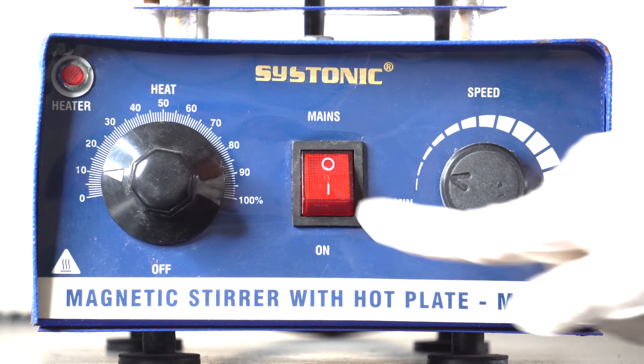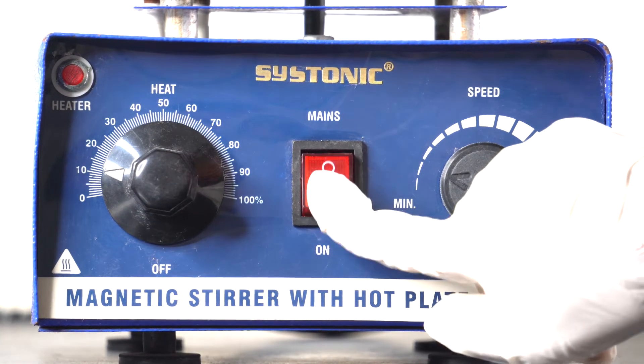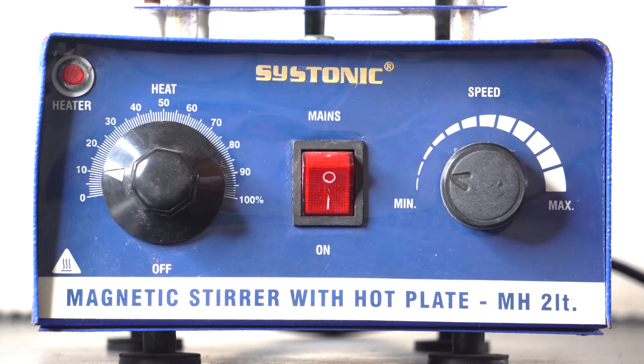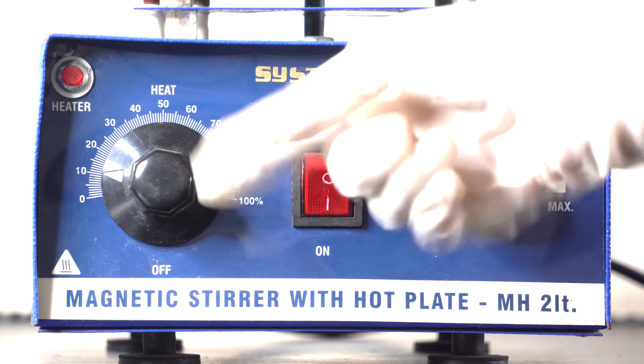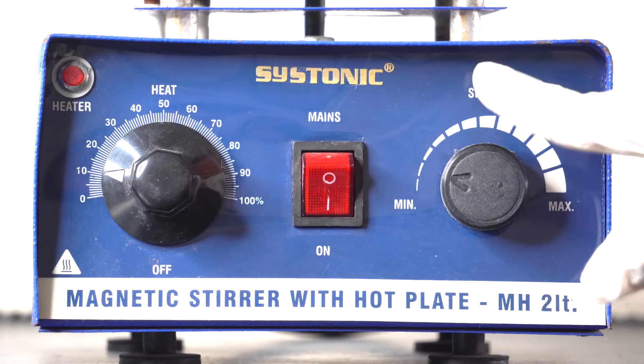As we can see on the magnetic stirrer with hot plate, we have a pilot lamp, main switch, and regulators to set the required temperature and speed for the magnetic stirrer.